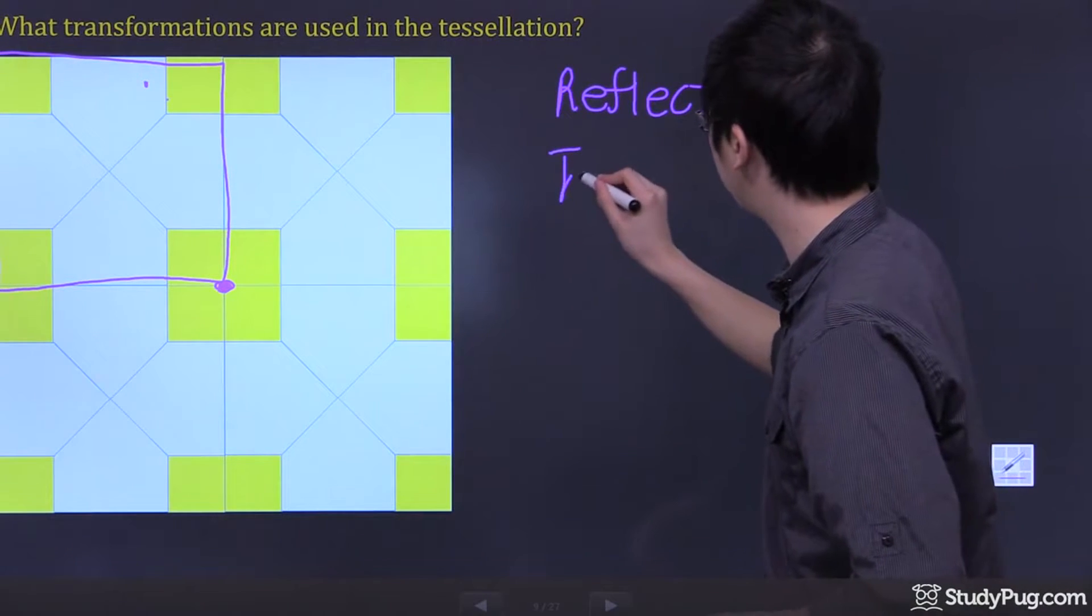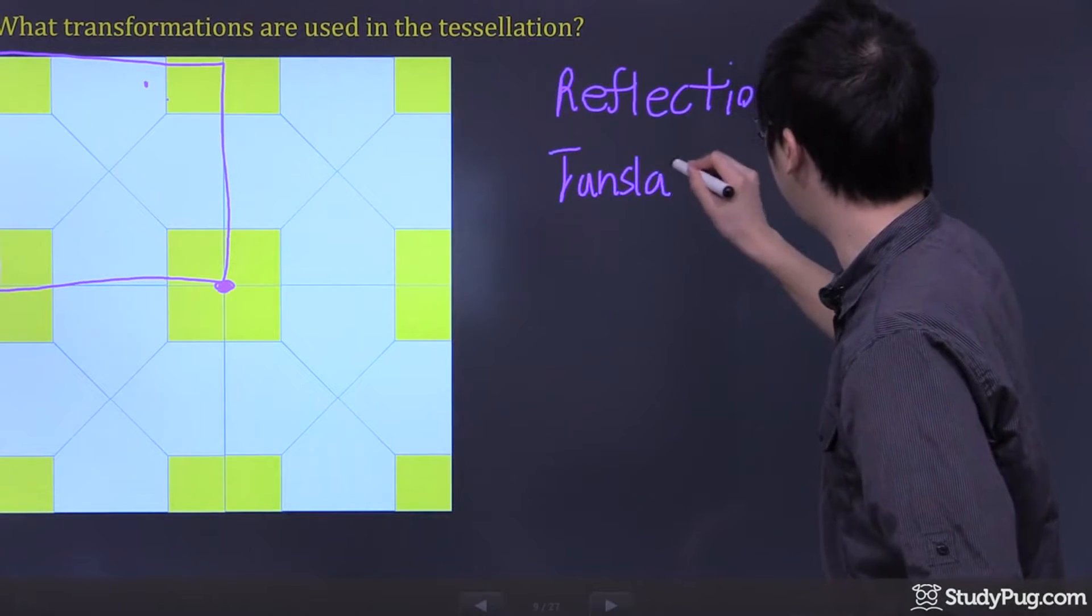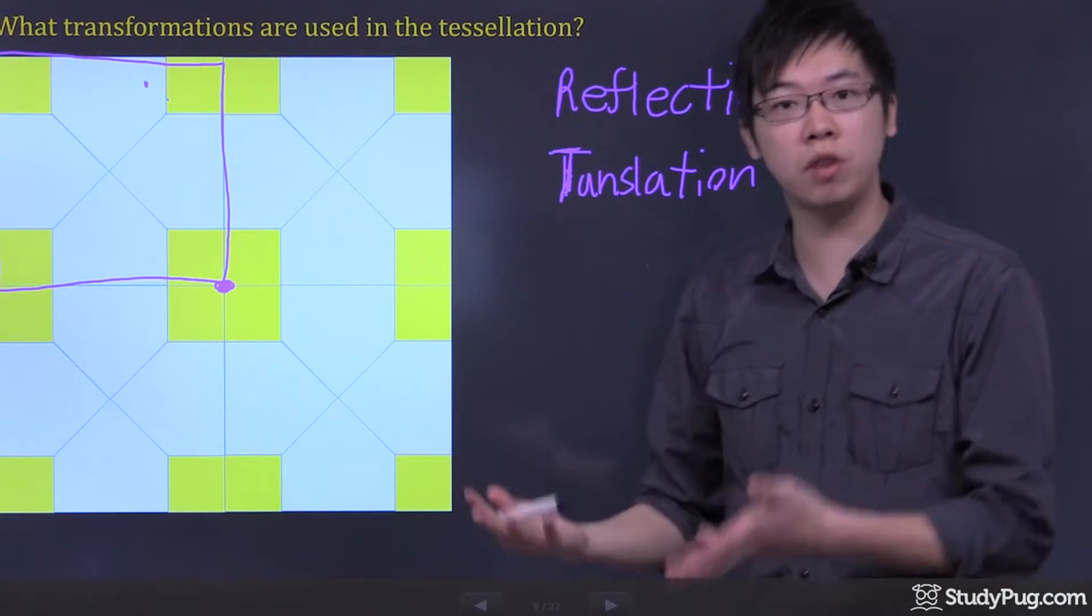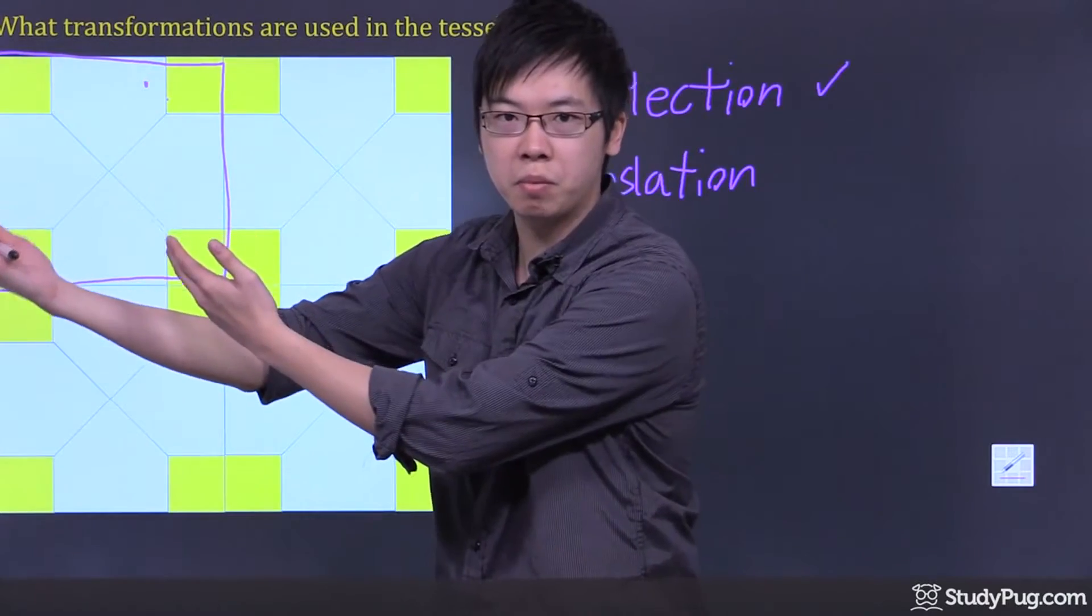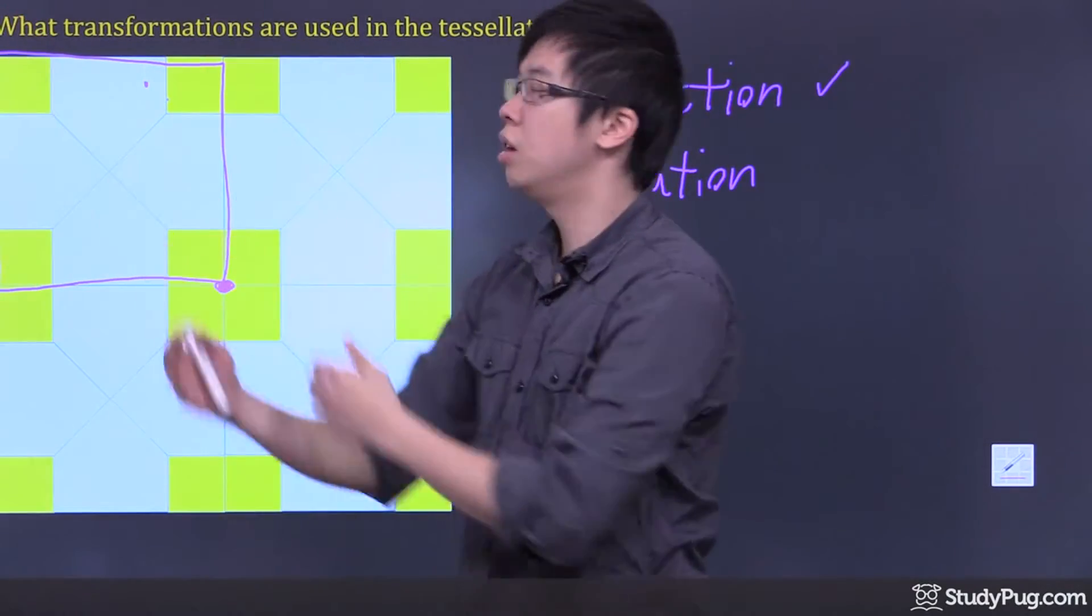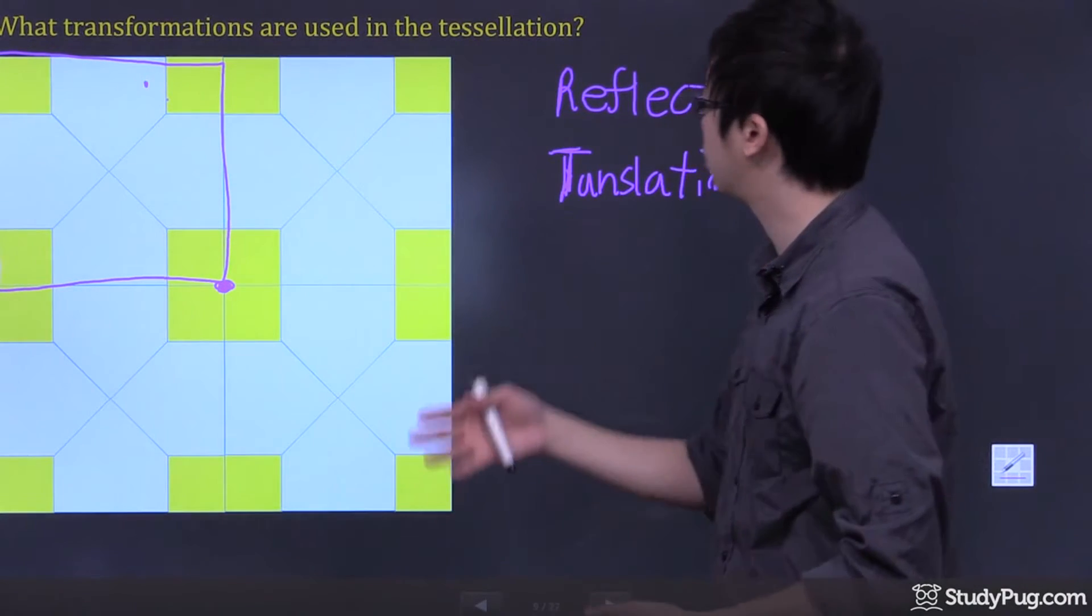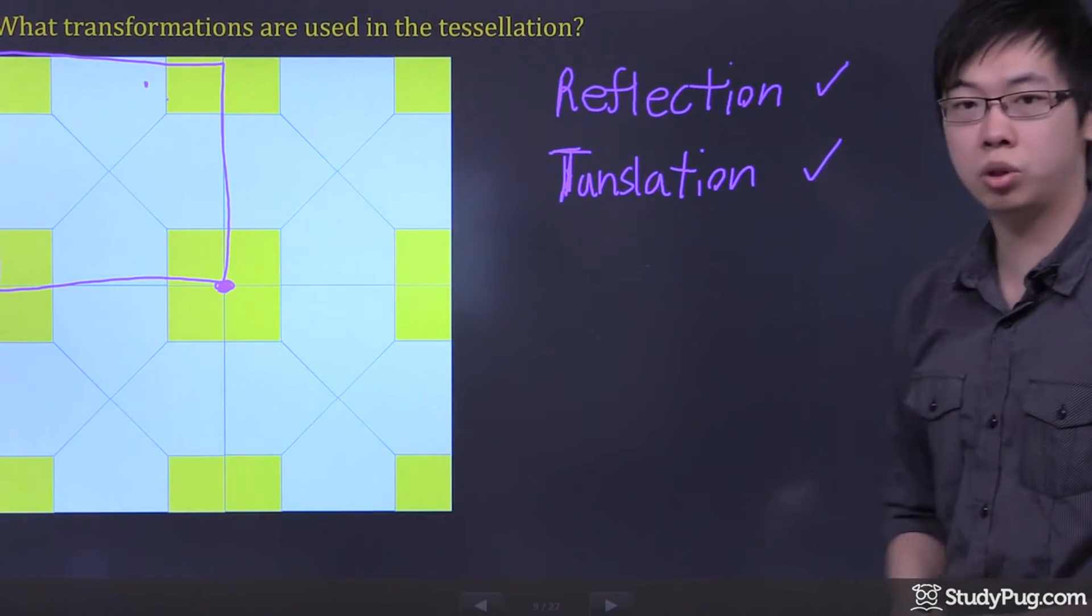And you can also do a translation. What translation means is you can actually move it. You can pick it up, move it to the left, move it to the right, move it down, move it up. You still get the same figures all over the place, and they can stack together. So translation also works just as well.